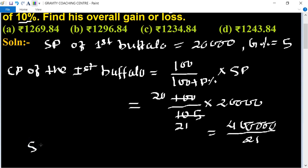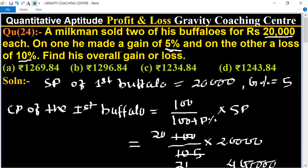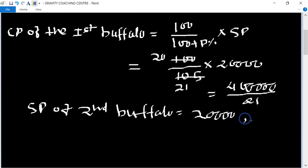In the other case, SP of the second buffalo equals rupees 20,000 and loss percent equals 10%. So we need to find the CP of the second buffalo.